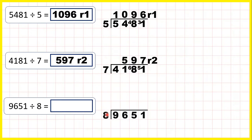Now 9,651 divided by 8. Taking the first digit, 9 divided by 8 is 1, remainder 1, because 1 times 8 is 8, but then we need 1 more to get to 9.